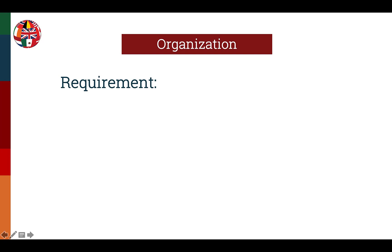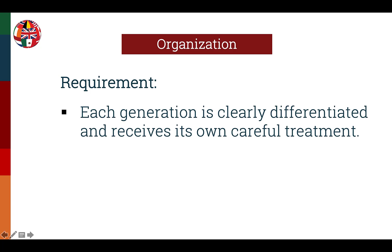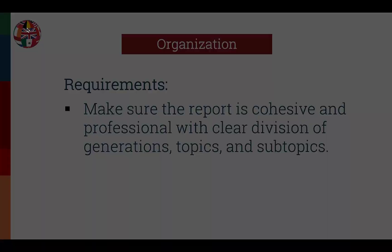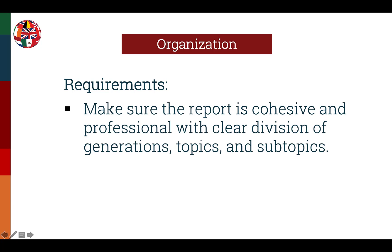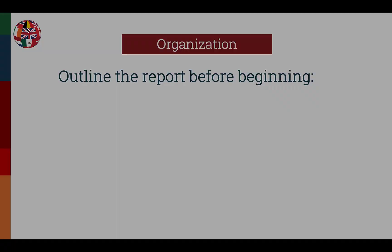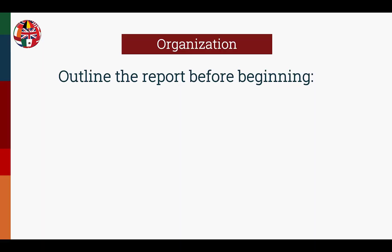When it comes to the organization of the research report, make sure that each generation is clearly differentiated and receives its own careful treatment. Use transitions to facilitate the flow of thought, helping the reader focus on where the report is headed next. Make sure the report is cohesive and professional with clear divisions of generations, topics, and subtopics. Use titles and subtitles as needed, formatted consistently throughout the entire report. To meet these organizational requirements, outline the report before beginning. An outline helps organize the evidence and sources so that strong conclusions are arrived at.